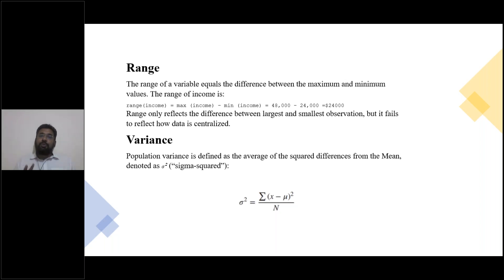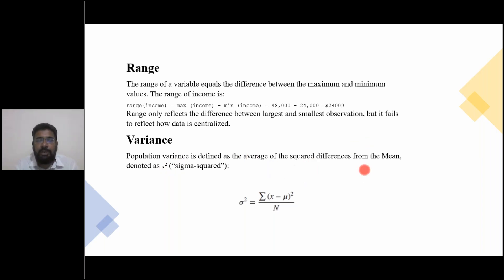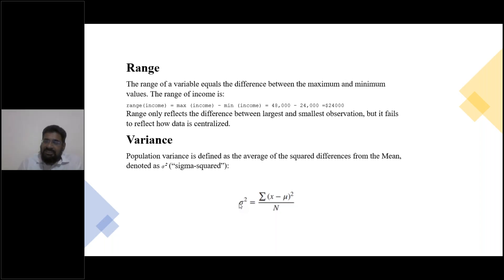Sigma squared (σ²) is what we call variance. If we take the square root of variance, we get sigma (σ) — which is the standard deviation. So sigma is standard deviation, and if you square standard deviation you get variance. These statistical concepts are very important — they tell us how much your data varies from the mean. Standard deviation tells you whether your data is closer to the mean or far away from it.